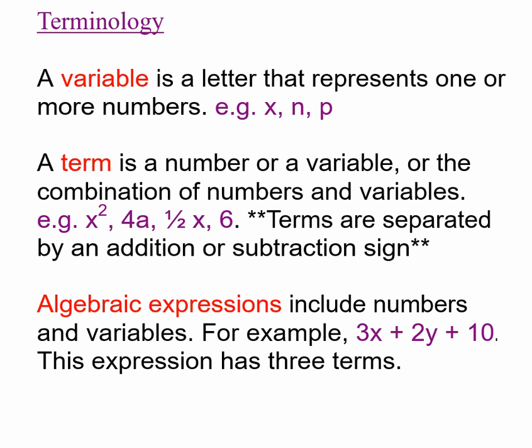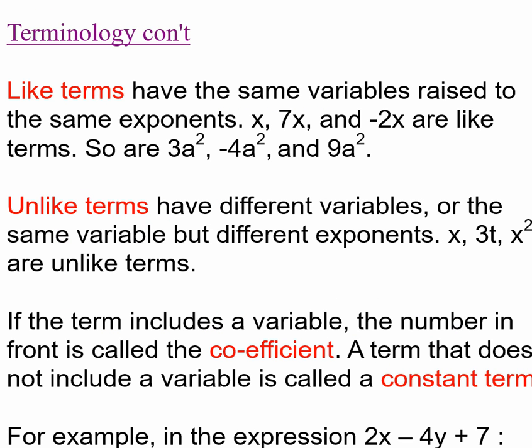Like terms: we have terms that are like each other. For example, x, 7x, and -2x, or 3a², -4a², and 9a² are called like terms because they have the same variable raised to the exact same exponent.